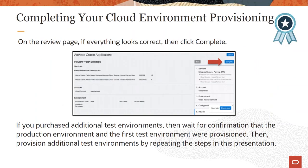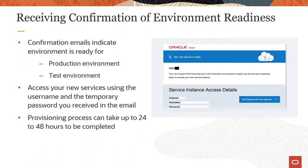On the review page, if everything looks correct, you'll hit Complete. If you've purchased additional test environments, then you'll have to wait for the confirmation that the initial test environment and production environment were provisioned. Then you can provision additional test environments by repeating the steps mentioned previously.